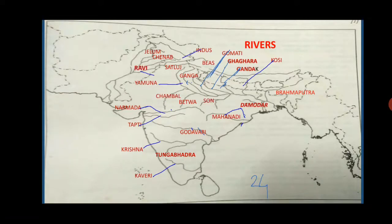Any one will be asked in the exam. What you have to do is simply put an arrow towards that black color line and write the name of the river.